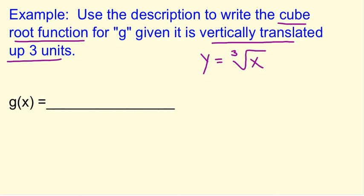Now it is going to be translated up 3 units. For us to go up 3, that happens outside the function, so we're going to be adding 3 outside. The g of x function is the cube root of x, and then at the end, not inside, you're going to be adding 3.